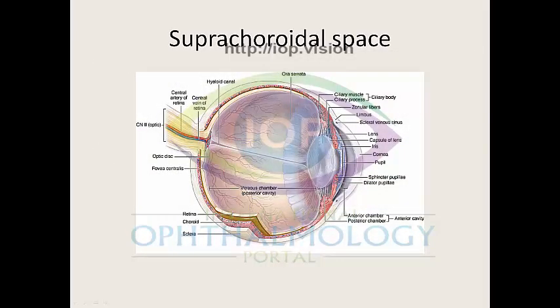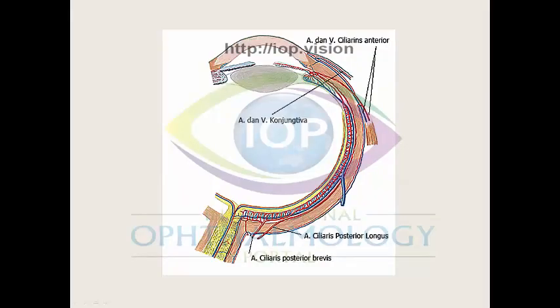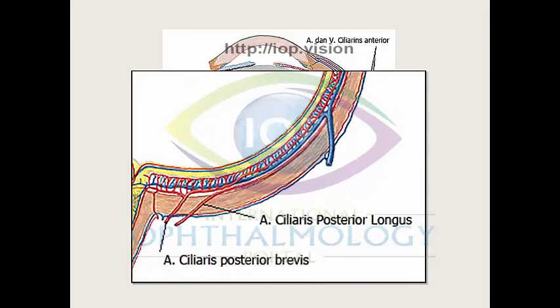The suprachoroidal space is a potential space between the choroid and the sclera. Here we have the short and long posterior ciliary arteries, with the long posterior ciliary artery running within the suprachoroidal space. The venous drainage comprises four vortex systems in the posterior quadrant, each system draining into the ampulla and exiting through the sclera as the vortex vein.